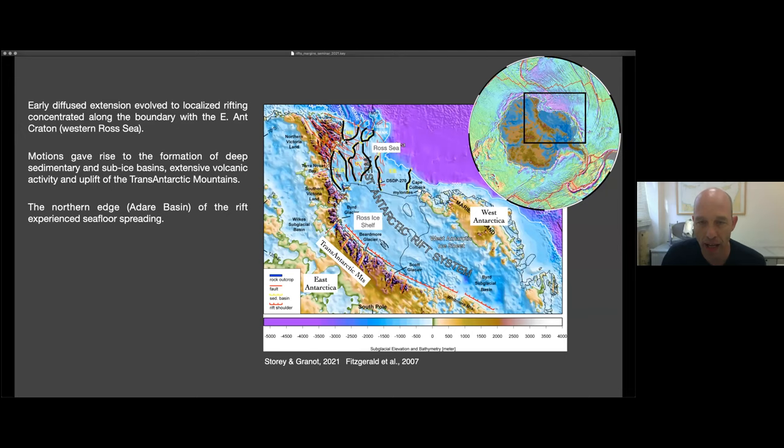The northern edge of the rift system during the Eocene and Oligocene, as I will show you in the next slide, resulted in the formation of seafloor spreading, which you can see here, the fossil spreading axis up in the northwest corner of the Ross Sea.